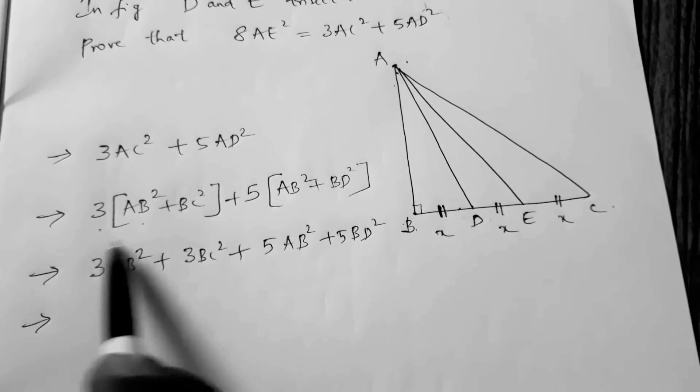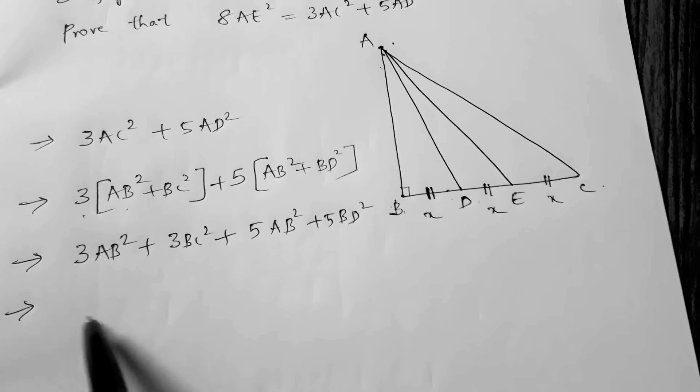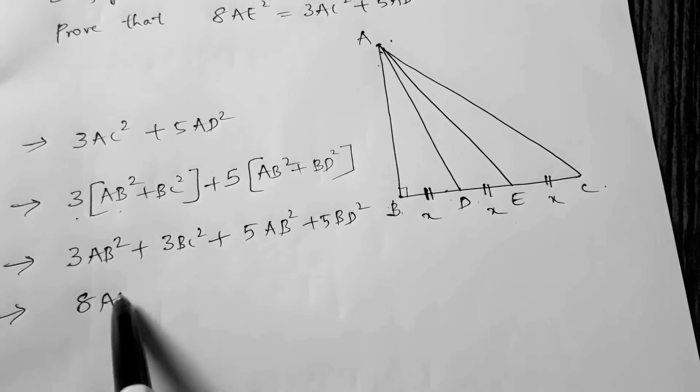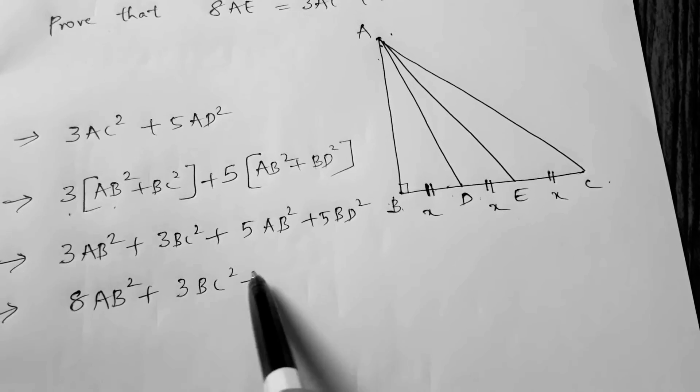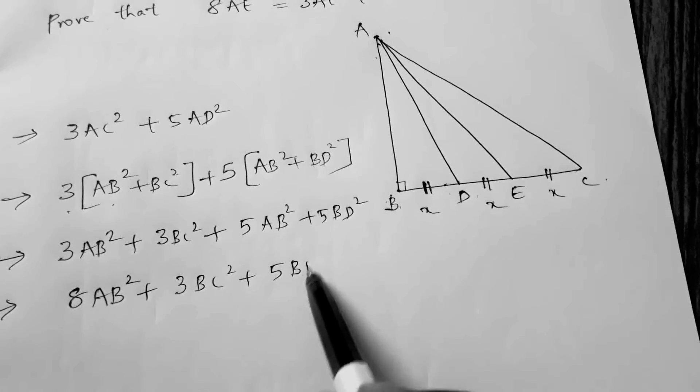Now, 3AB² plus 5AB² total is 8AB². What is left? 3BC² plus 5BD².